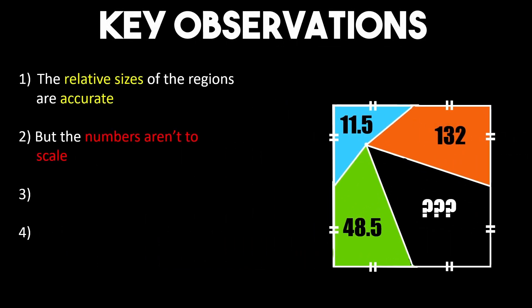The next two observations are pretty obvious but they play an important role in finding our final answer. Looking at the numbers of the areas that are given to us we can see that the largest area is 132 and that the sum of all three of our known areas equals 192.